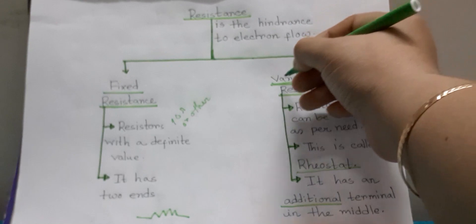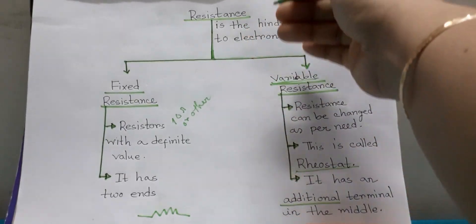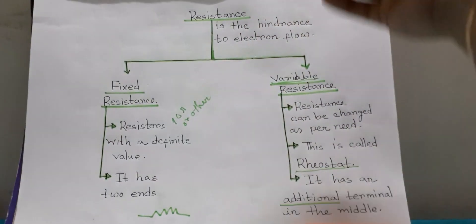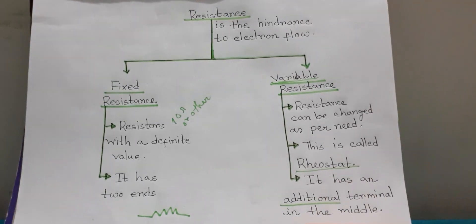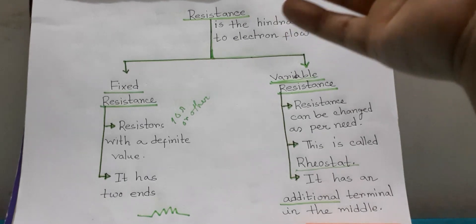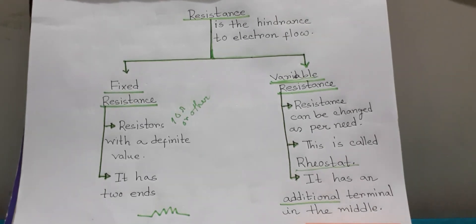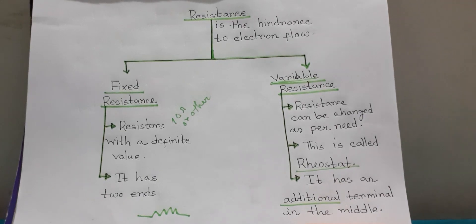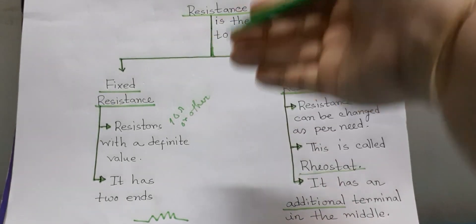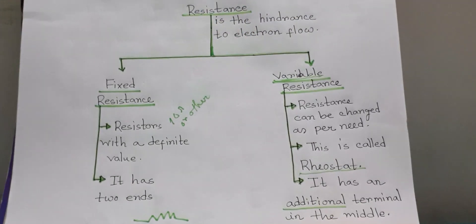So it is now clear what is resistance, what is specific resistance, and what is conductivity under current electricity. We have already discussed these earlier, and I have discussed them again today. This is very important for our exam.